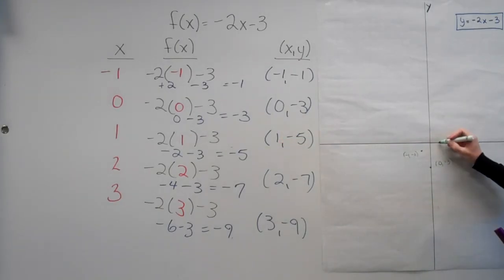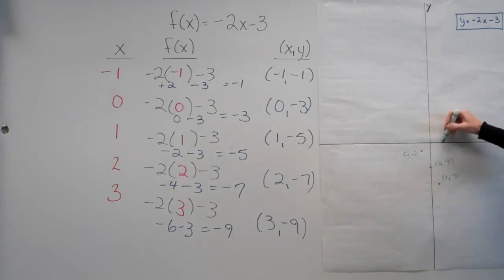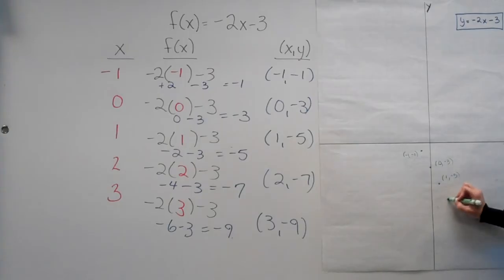X is 1, y is negative 1, 2, 3, 4, 5. And let's see, x is 2, 1, 2. Y is negative 1, 2, 3, 4, 5, 6, 7. And positive 3, negative 9.